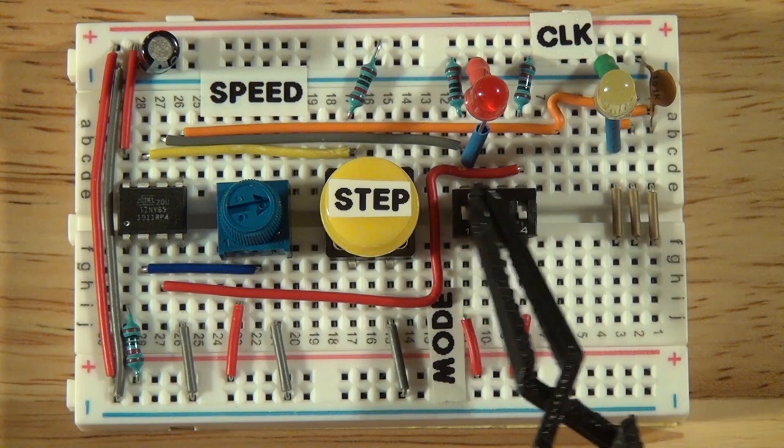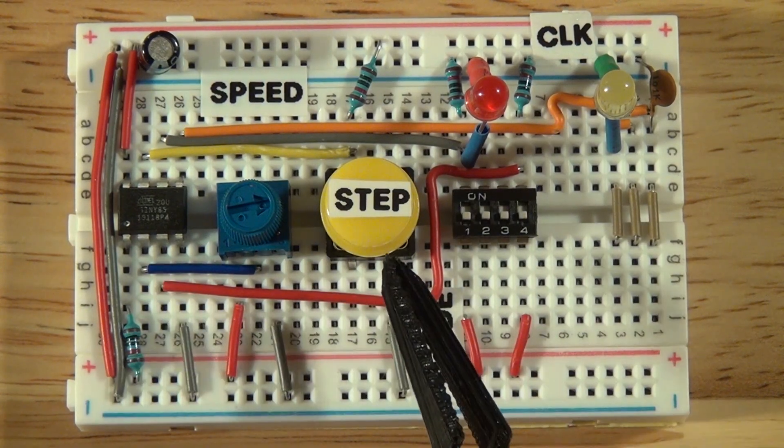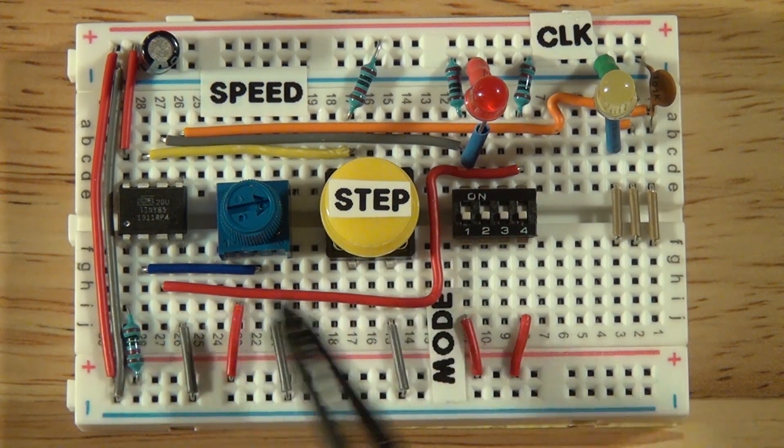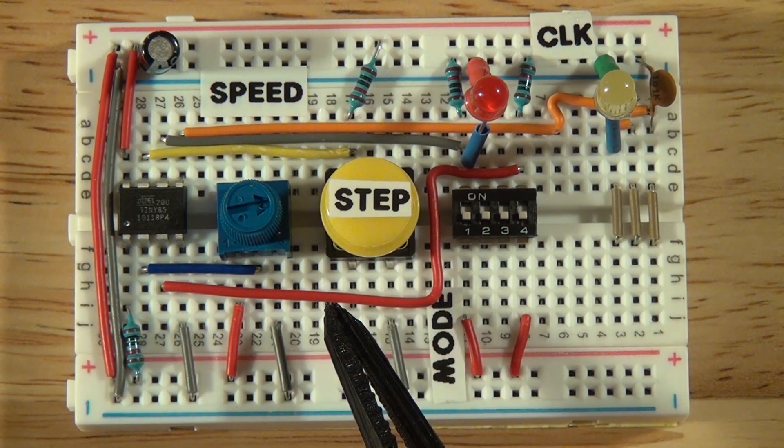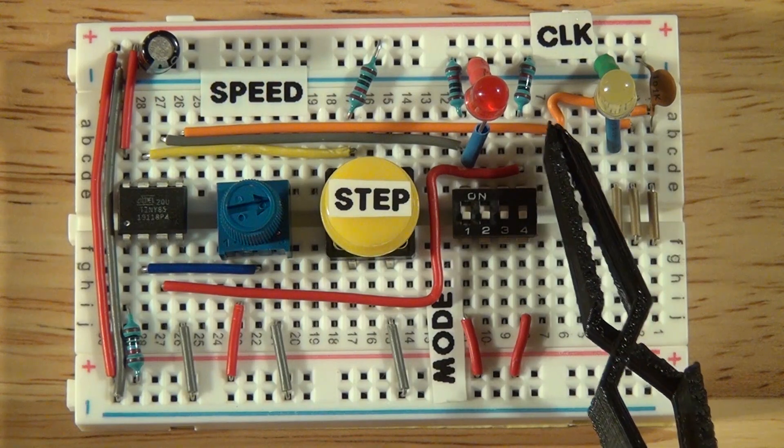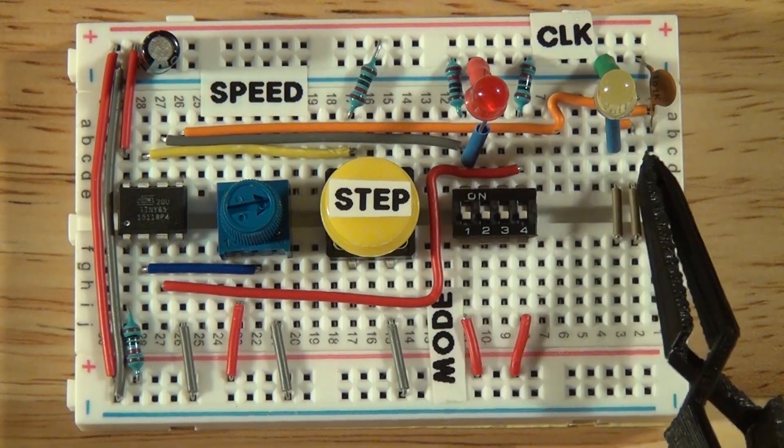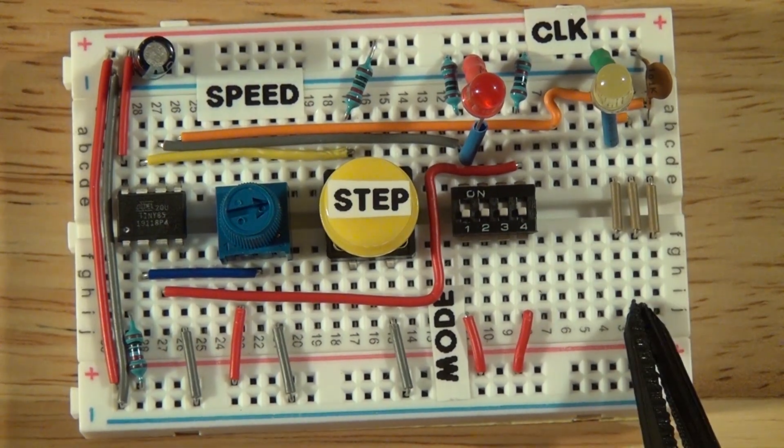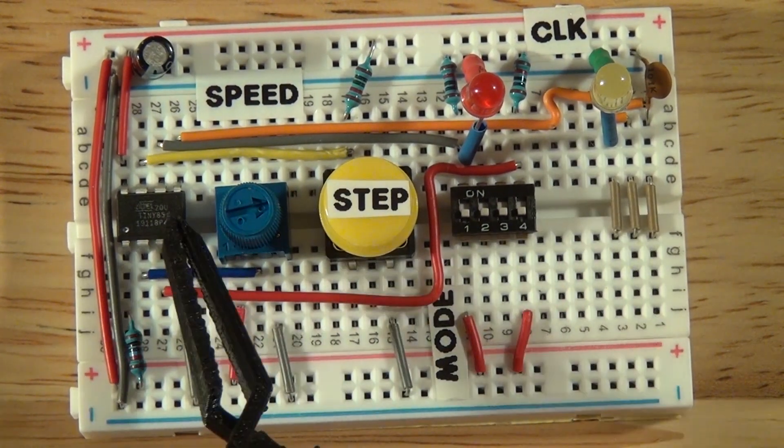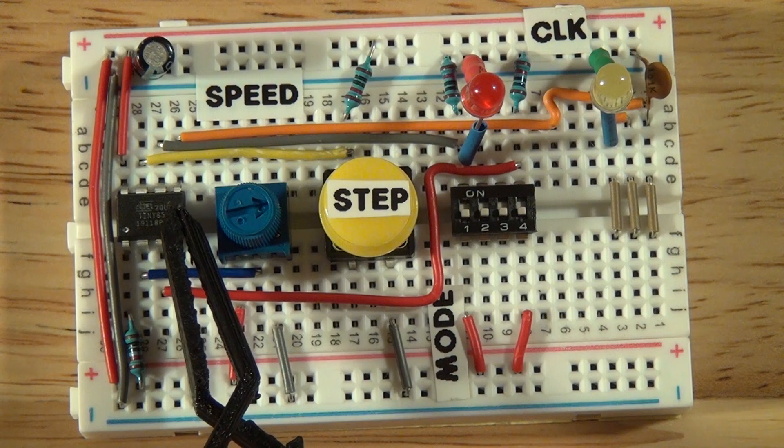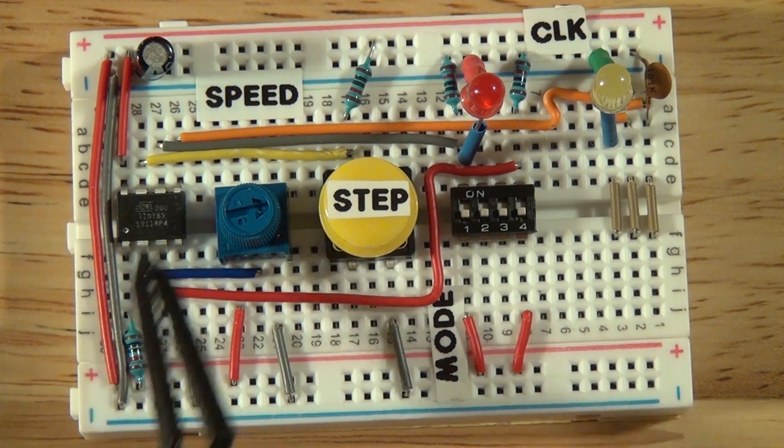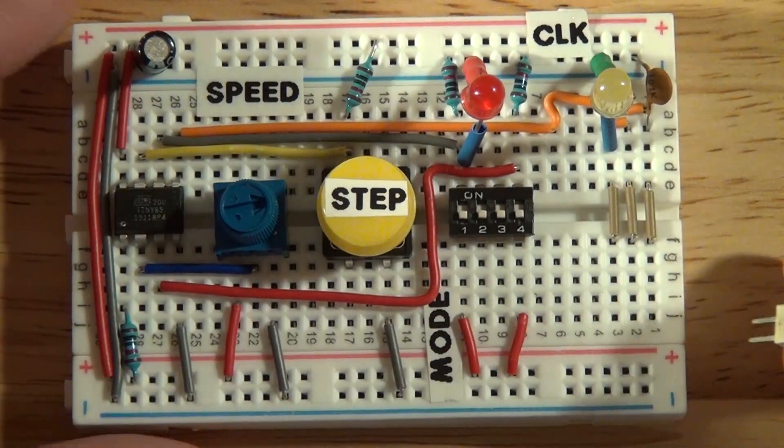This red wire here is the halt signal, which stops the clock if you're in auto mode, and it causes the button to be ignored if you're in manual mode. And then the last thing here is the clock output itself, which is wired to all three of these rails on both sides. And the output for that is coming from pin five of the ATtiny.